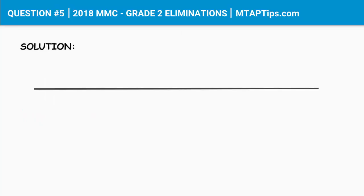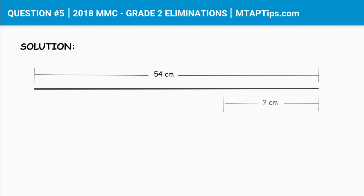Let's say this line is the string with the length of 54 centimeters. The question was: how many centimeters should we cut off this string so that we could have 3 decimeters left?